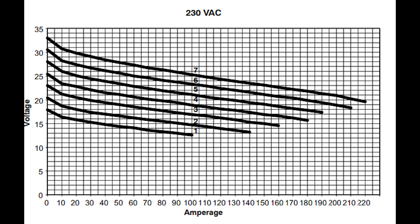What's going on is it just has multiple taps on the transformer, and each tap has a different voltage-amperage curve. As amperage goes up in each power range, the voltage drops — again because it's a transformer-based machine and you can't exceed output wattage over input. Looking at the curves, at 100 amps on the number-seven curve you could produce about 28 volts, so you could technically spray at 100 amps.